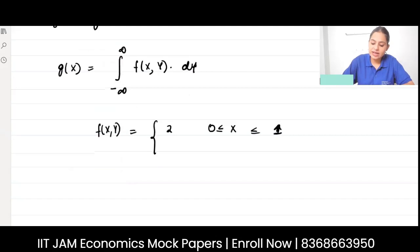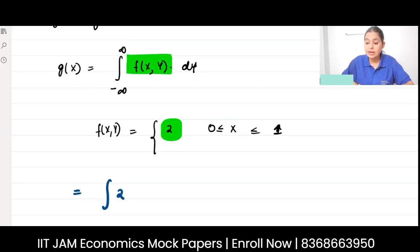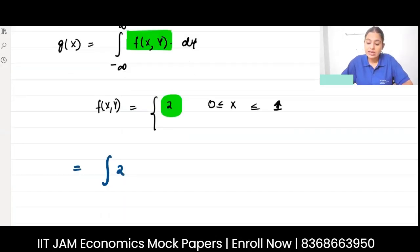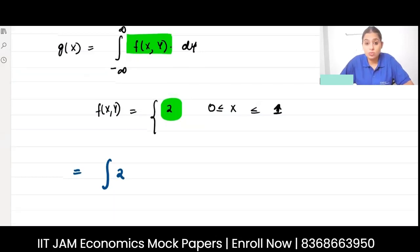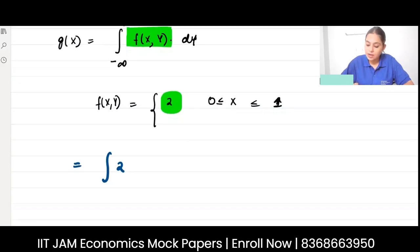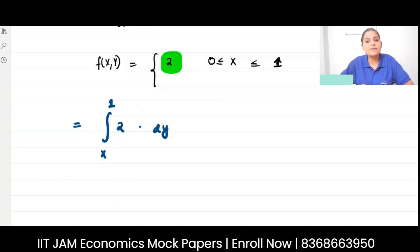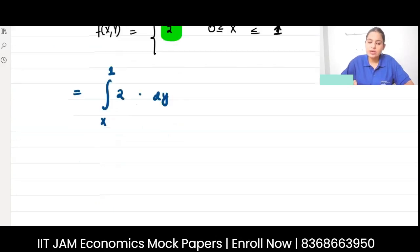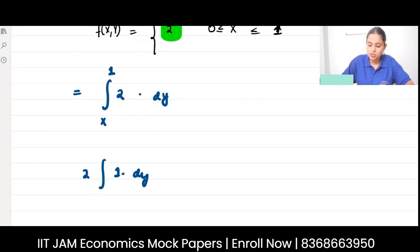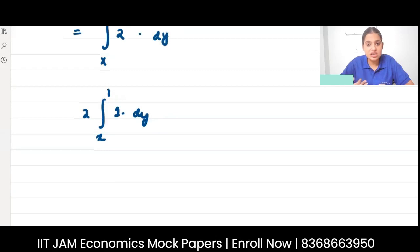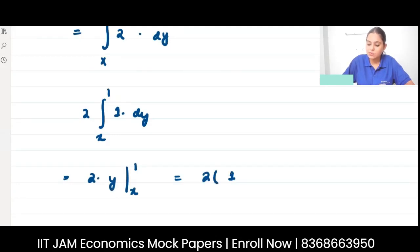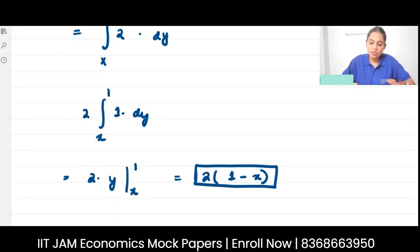I'll substitute the value 2 into the integral. Since x is between 0 and 1, I integrate over y from x to 1. Since 2 is a constant it comes out, so the integral of 1 dy from x to 1 is y evaluated from x to 1. This gives 2 times (1 minus x), so g(x) = 2(1 - x).